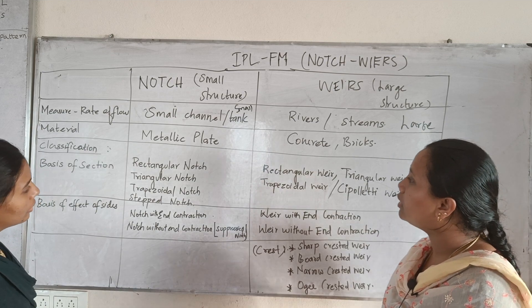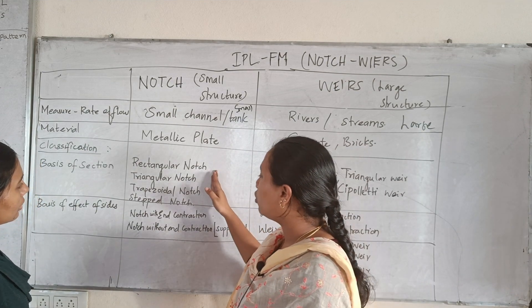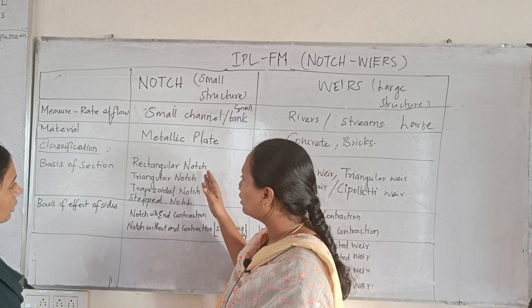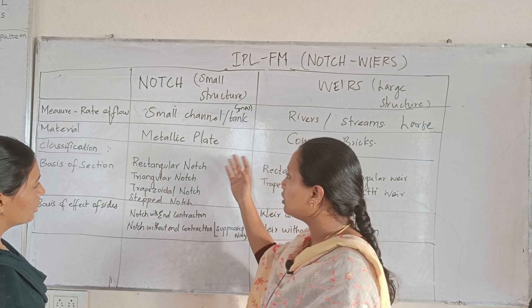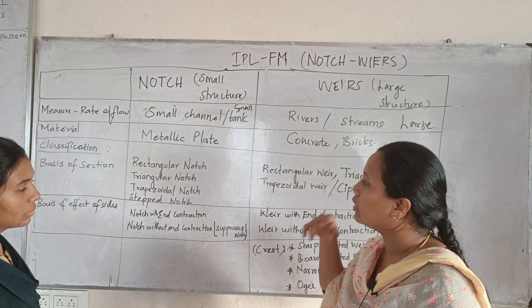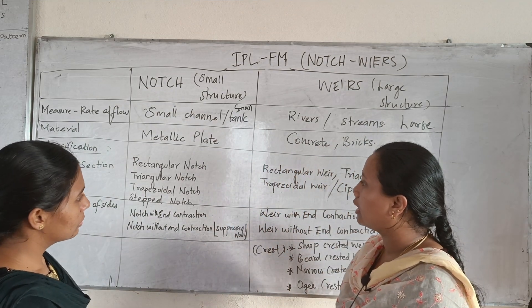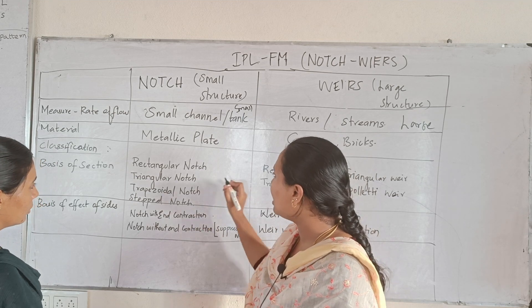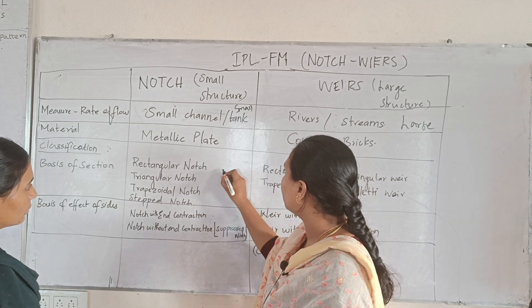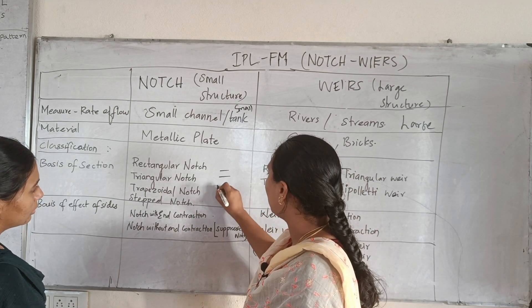Now, what does the classification based on sections mean? There are various types of notches — triangular, trapezoidal, and other shapes. If you consider the notch exactly, the water flows through it.